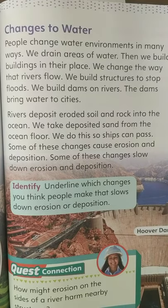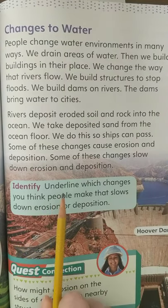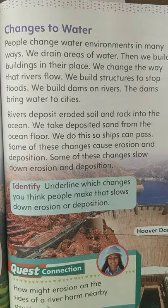Sometimes we want to change the way a river is flowing, or we want to stop the river — like building a dam — to save up water that we can use for other things. So we make lots of changes to the water too. Now underline which changes you think people make that slow down erosion or deposition. Find a sentence here that gives an example of something we do to slow it down.